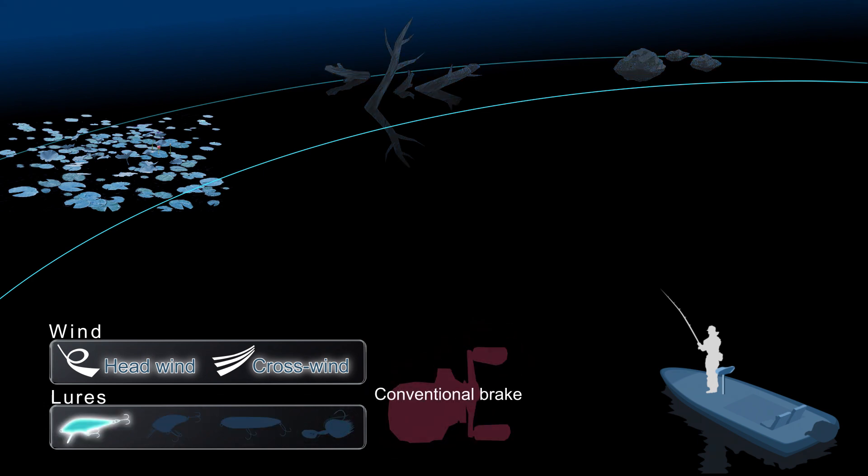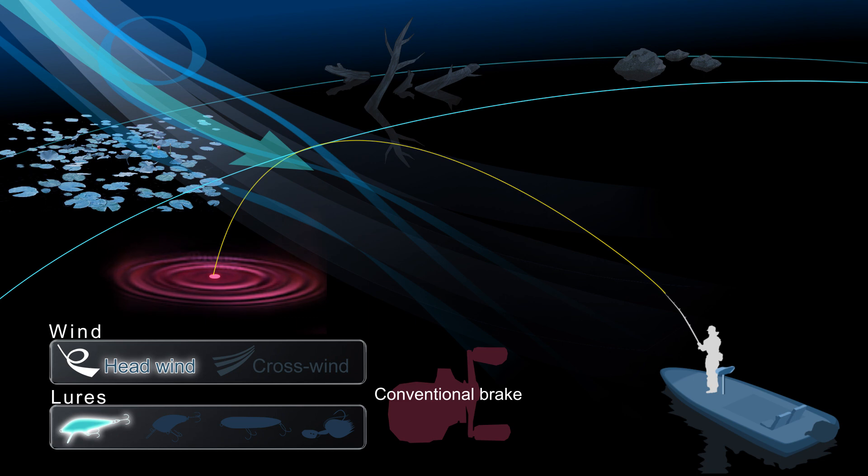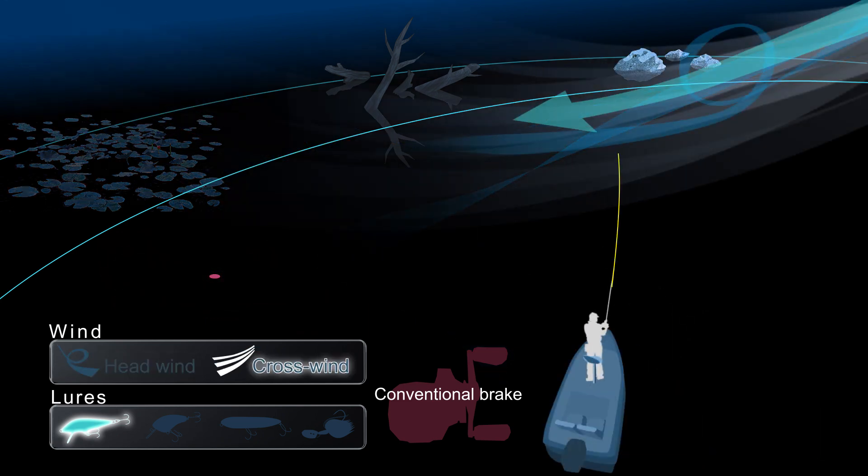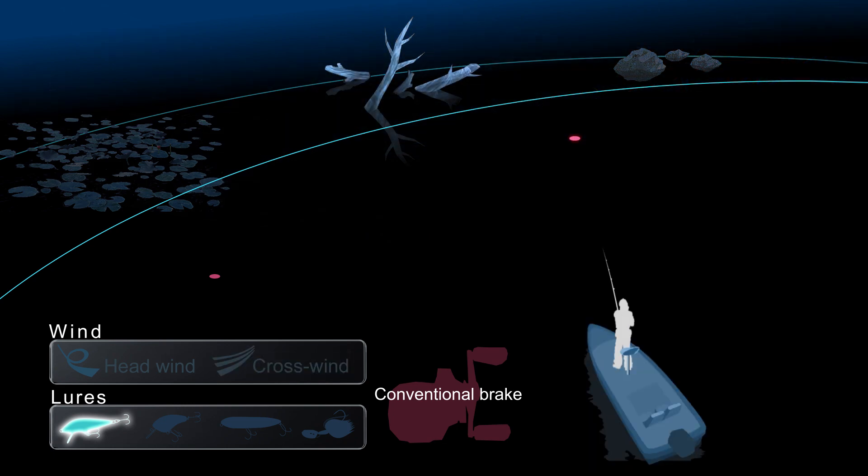Conventional brake systems require more thumbing and more adjustment to the brake to best match lures and conditions. With conventional brakes, an incorrect adjustment can greatly limit casting distance and cause backlash.